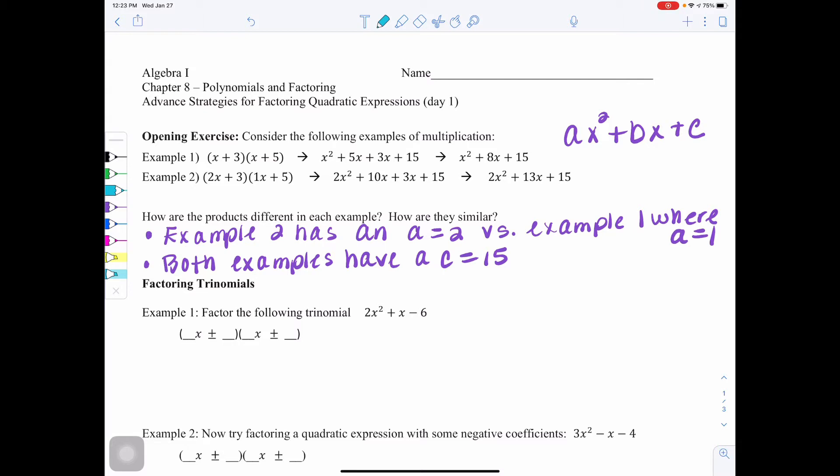So you're going to see over here in the corner, ax squared plus bx plus c. So remember that a, b, and c are numbers. a is the coefficient of x squared, b is the coefficient of x, and c is your constant number at the end. So when looking at these, example 2 has an a value of 2, where example 1 has an a value of 1.